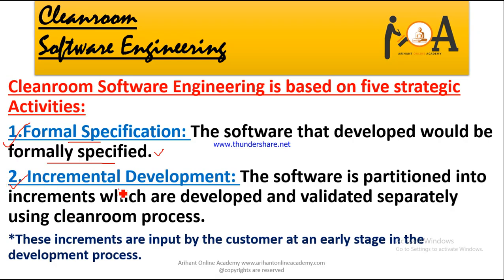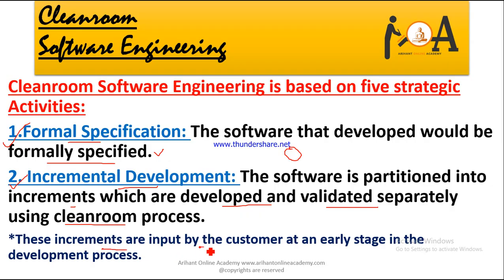The second strategic activity is incremental development. The software is partitioned into increments — we divide it into modules and develop and validate each separately using the cleanroom process. When a customer gives requirements, we build some initial parts, then increment from the next version onwards, validating each increment separately. These increments are input by the customer at an early stage in the development process, so the model is not developed completely first but divided into partitions and worked on incrementally.